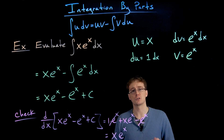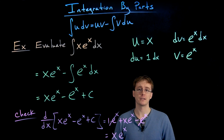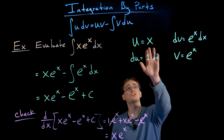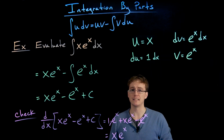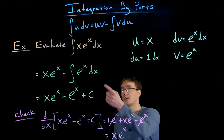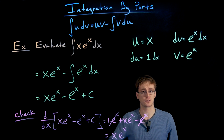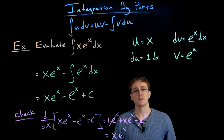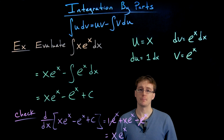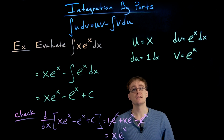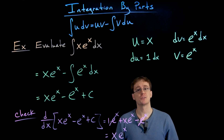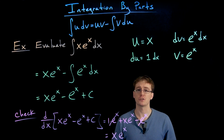The other tricky part about using this technique is making the right choice for u and dv. Sometimes if you make the wrong choice, the integral you end up with is much more complicated and not one you want to work with. Making the correct choice will be very useful. Luckily there is a nice acronym that helps us make our choice and set up our integration by parts formula.